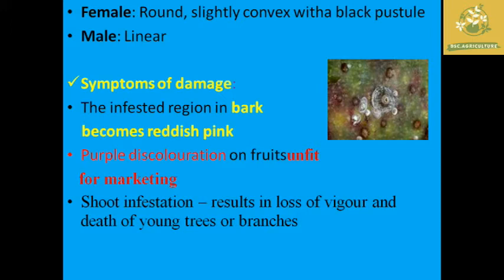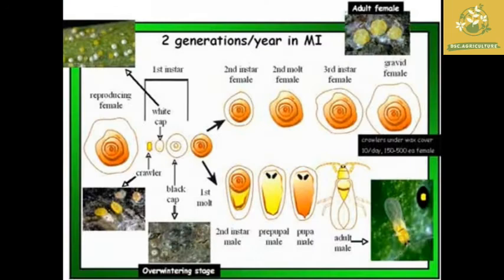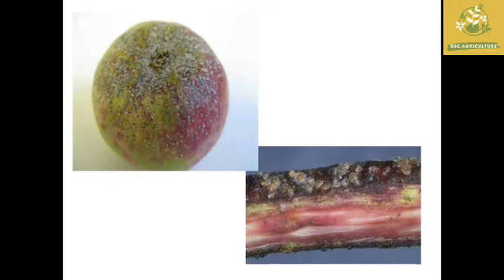The damage symptoms of San Jose scale include the infested bark becoming reddish-pink in color with purple discoloration on the fruit surface, making them unfit for marketing. Infested shoots result in loss of vigor and death of young plants or branches in severe cases. These are the pictures of the San Jose scale species showing the infections caused by these insects.